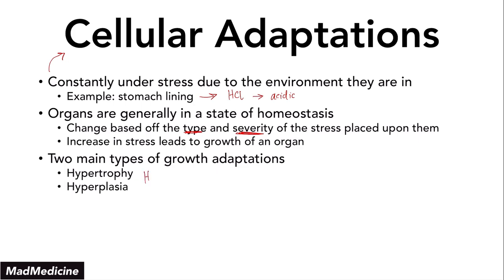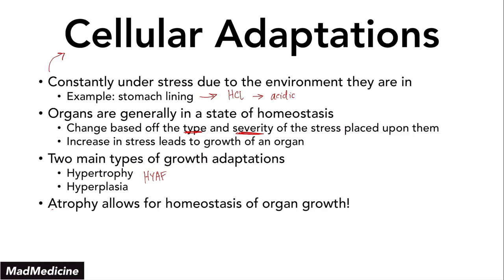The first is hypertrophy and the second is hyperplasia. Both of these are really high yield, so you should definitely watch our videos on both of these topics. When it comes to organ homeostasis, the mechanism our body uses to reverse the growth adaptation when stress is removed from an organ is called atrophy. Atrophy allows homeostasis of organ growth to occur, and this is also a very high yield subject — we have a video on that as well.